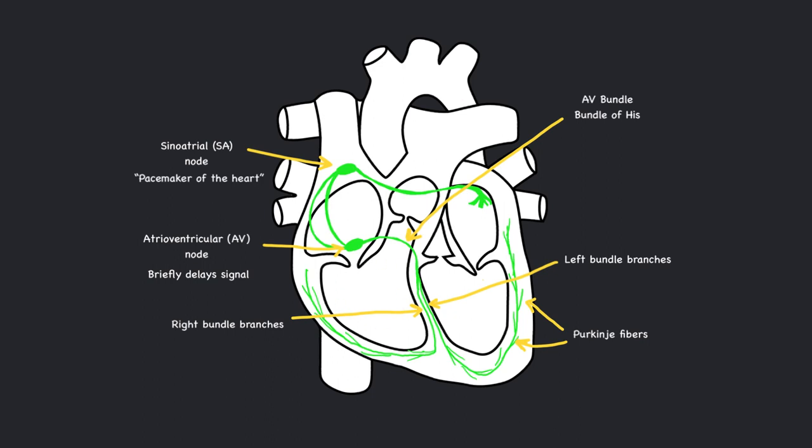Both ventricles will contract at the same time. After contraction, the heart muscle cells need to reset for the next cycle. This is why the ventricles are relaxing while the atria are contracting and vice versa.